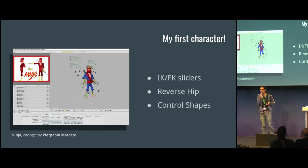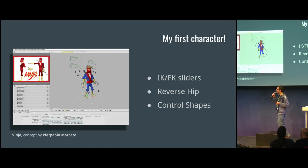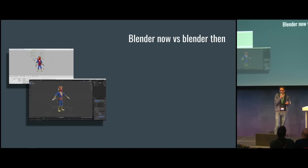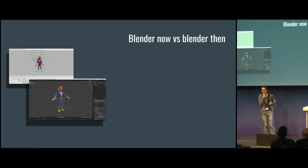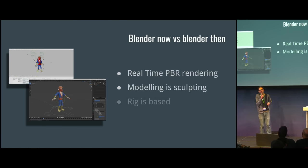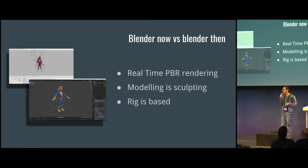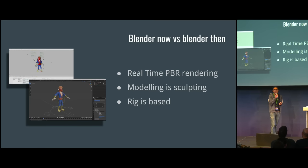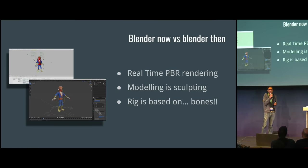I was very proud of the incredible features I could put into it — like IK controls, FK controls, reverse shapes, control shapes. It's stuff that we take for granted, but that looked like cutting-edge technology then. And when I needed characters for my videos, I imported this into Blender 3 and gave it new materials to make it work with the new renderer. It was very interesting to see how much has changed: rendering is now real-time, physically based, and we model using sculpt mode, like modeling clay.